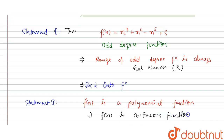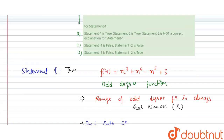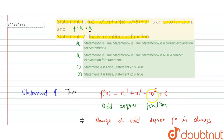So Statement 2 is also true, and it is a correct explanation of Statement 1 — the function is onto because it is a continuous odd degree polynomial with range ℝ. Therefore option A is the correct answer.